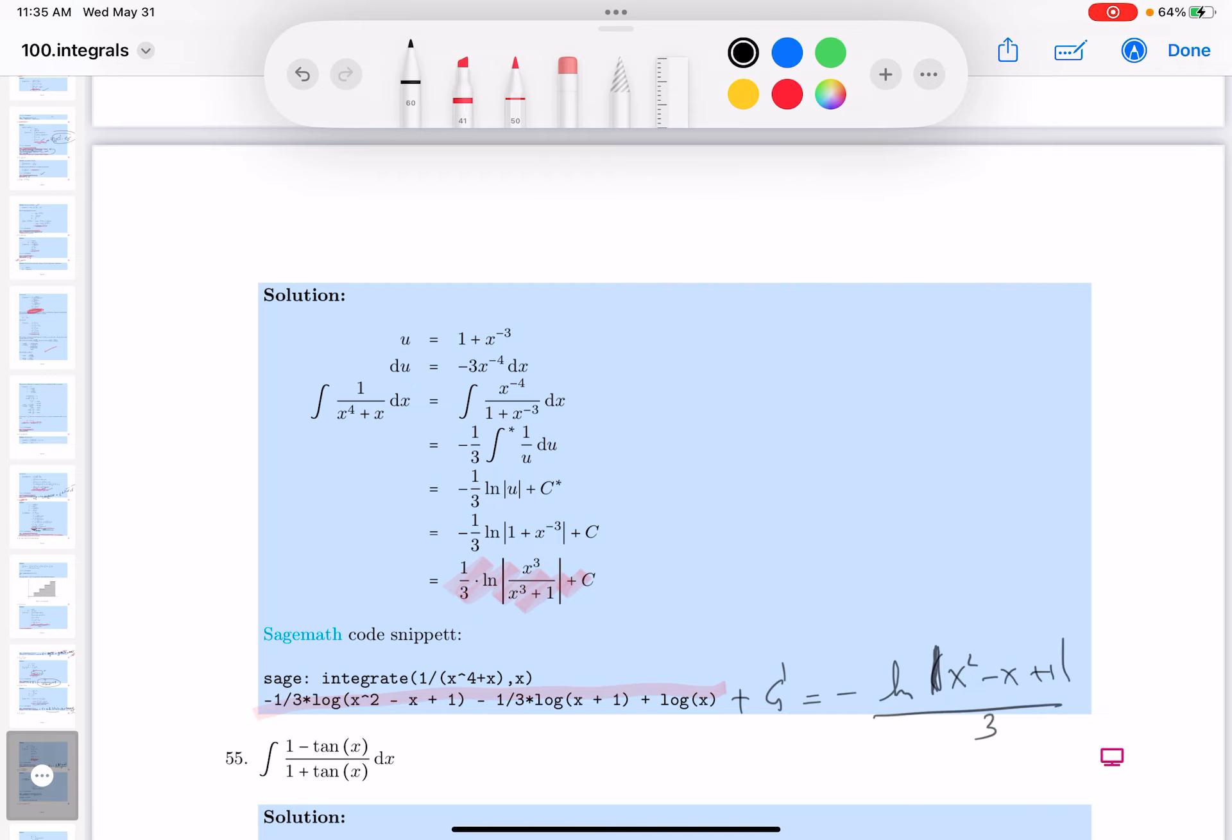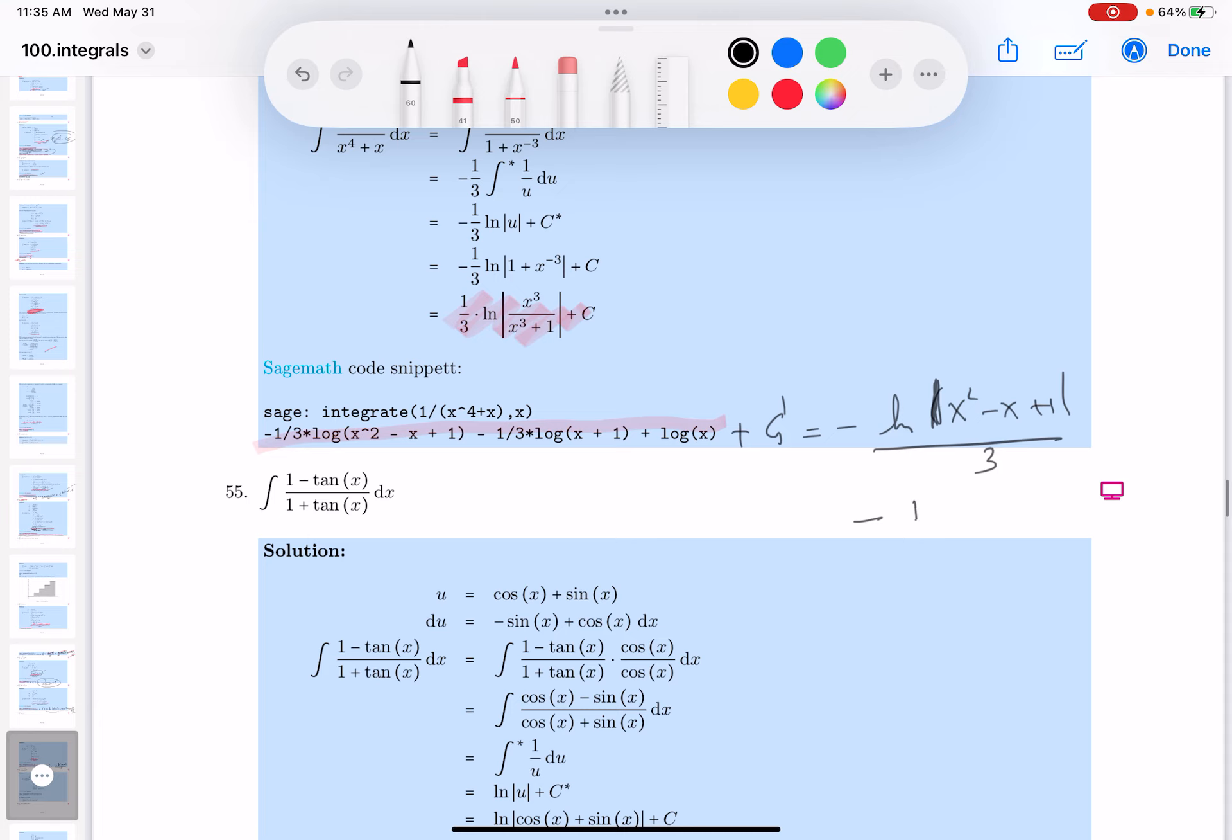And then it's going to be minus 1/3 log ln, and that's going to be x plus 1. And what do you get there? Plus log of x. A little strange, but let's write this down and take a look at that.